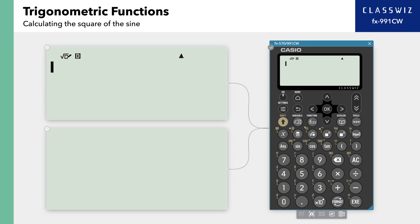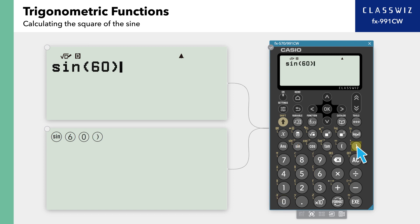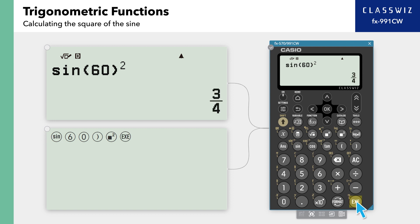Next, we will go over calculating the squares of trigonometric functions. Note that the squares of trigonometric functions are expressed differently on the screen than other expressions. Enter sine, 6, 0, and closing parenthesis, then press the squared button. This is what the on-screen expression of sine 60 degrees squared looks like. Press Execute to return the result of sine 60 degrees squared, which is 3 over 4.